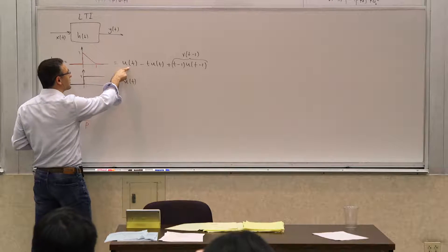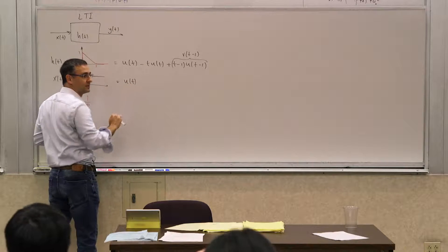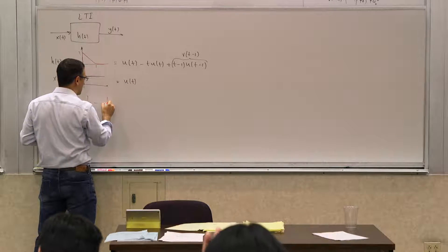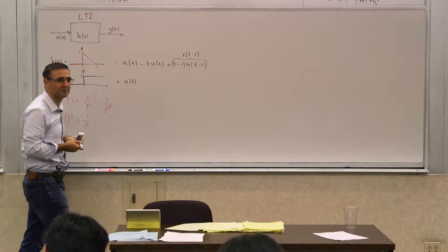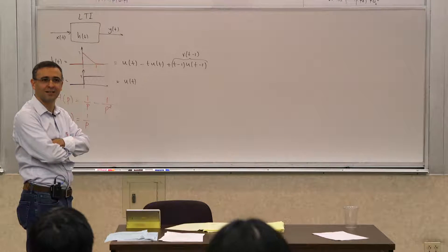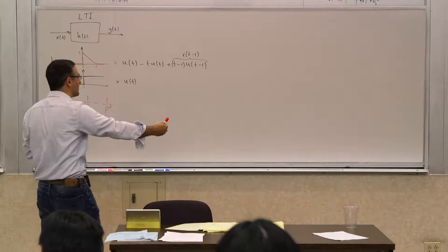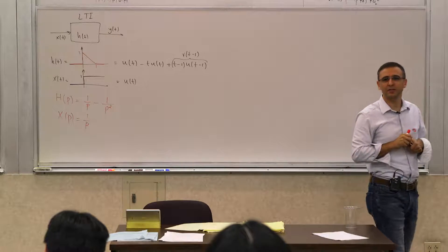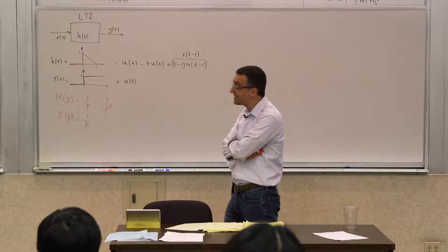What is h of p? The first term is one over p, right? What is the second term? Minus one over p squared. What is the third one? What do you do with that? It's a delay, right? It's not happening at time t, it's happening at time t minus one, or at t equals one as opposed to t. So what is that? What's the operator associated with that? Or in general, what is the operator associated with the delay?